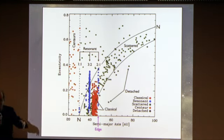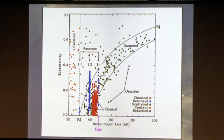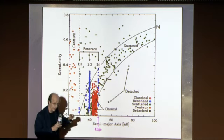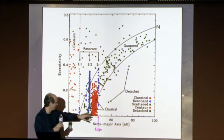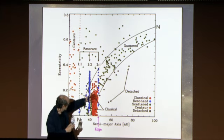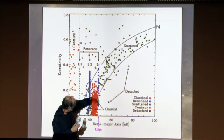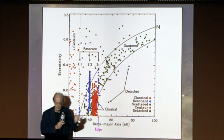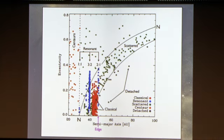The resonances convey dynamical stability to objects within them. The original expectation was that the Kuiper Belt would be a relatively thin pancake, but it's actually a fat donut-shaped distribution. Most surprisingly, it has a very sharp outer edge — there are essentially no objects beyond 50 AU, close to the 2-to-1 mean motion resonance with Neptune, for reasons not fully understood but likely related to external perturbations.